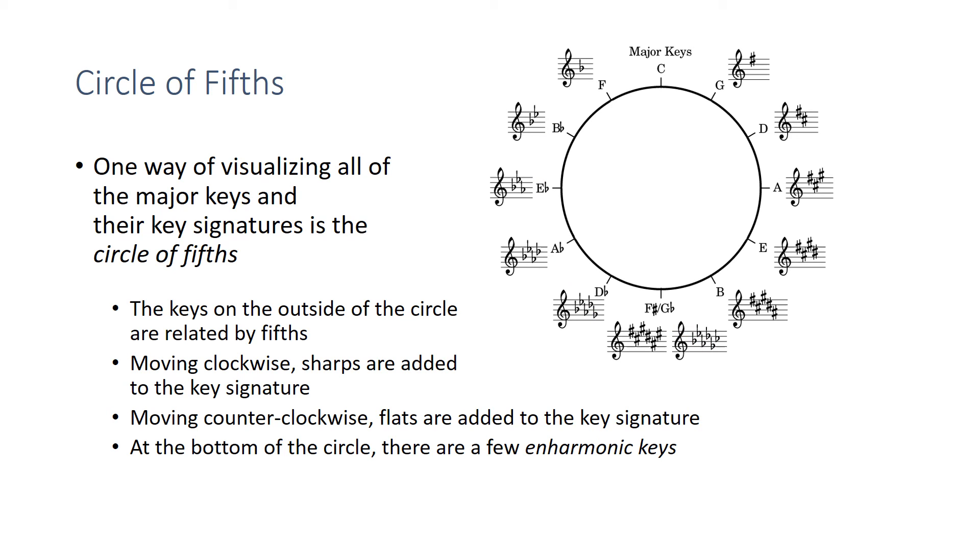At the bottom of the circle, there's a few enharmonic keys. This one shows F sharp with six sharps and G flat with six flats are enharmonic keys. They sound the same. There should also be an enharmonic key here: seven flats, which would be C flat, same as B. And over here, an enharmonic key with seven sharps would be C sharp, which is enharmonic to D flat.